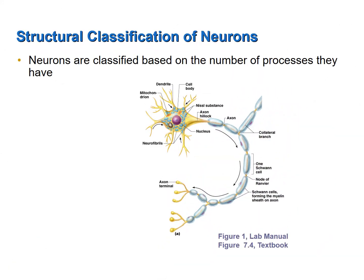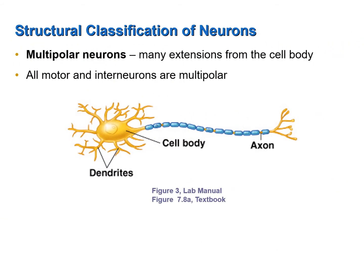Neurons are also classified structurally, and they're classified by the number of processes that they have. Remember, a process is an extension, a nerve fiber that extends from the cell body. A neuron that has multiple processes — such as this one, with more than two — it is a multipolar neuron, as shown here.